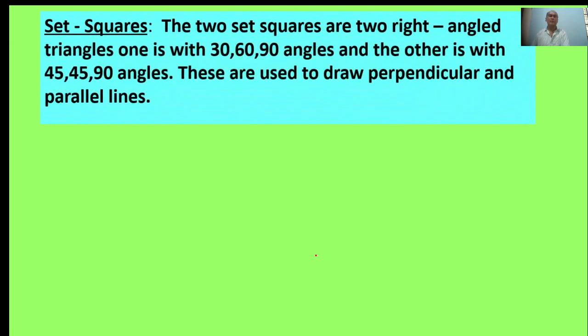Set squares. The two set squares are two right-angled triangles. One is with 30, 60, 90 degrees, and the other is with 45, 45, 90 angles. These are used to draw perpendicular and parallel lines.